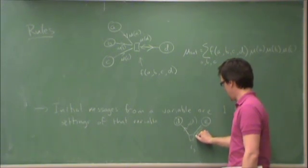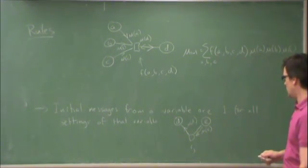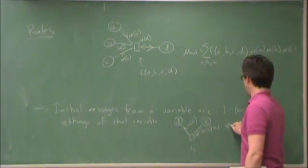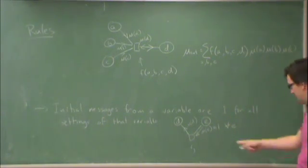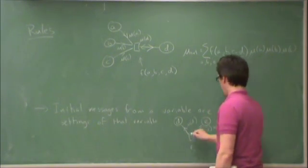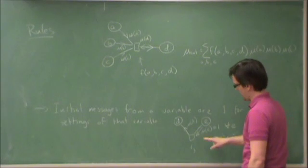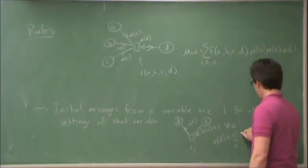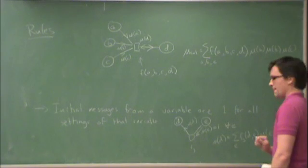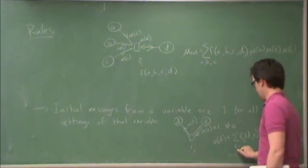So the initial message that should be passed along here, mu of e, is 1 for all possible settings of that variable. In other words, mu of e is equal to 1 for all e's. What we end up with then is that at F3, following my sum product rule, mu of d is equal to the sum over everything except d, which is just e, F3 of d and e times mu e, but mu e is just 1. So I end up with the calculation I had.